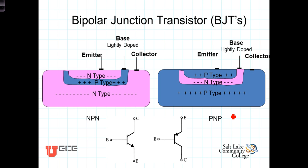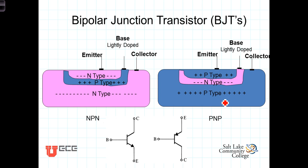The PNP transistor is the dual or the counter image of the NPN transistor. What is N-type in the NPN transistor is P-type in the PNP transistor, and vice versa. In the PNP transistor, holes serve as the majority carrier and flow from the P-doped emitter across the narrow, lightly doped N-base and into the P-type collector. Once again, in the symbol, the emitter is noted with an arrowhead pointing in the direction of conventional current flow.